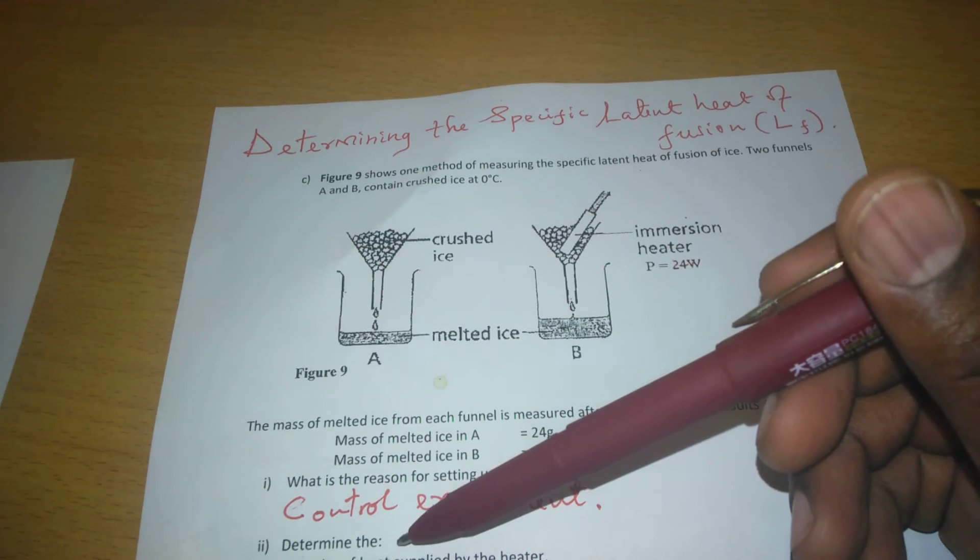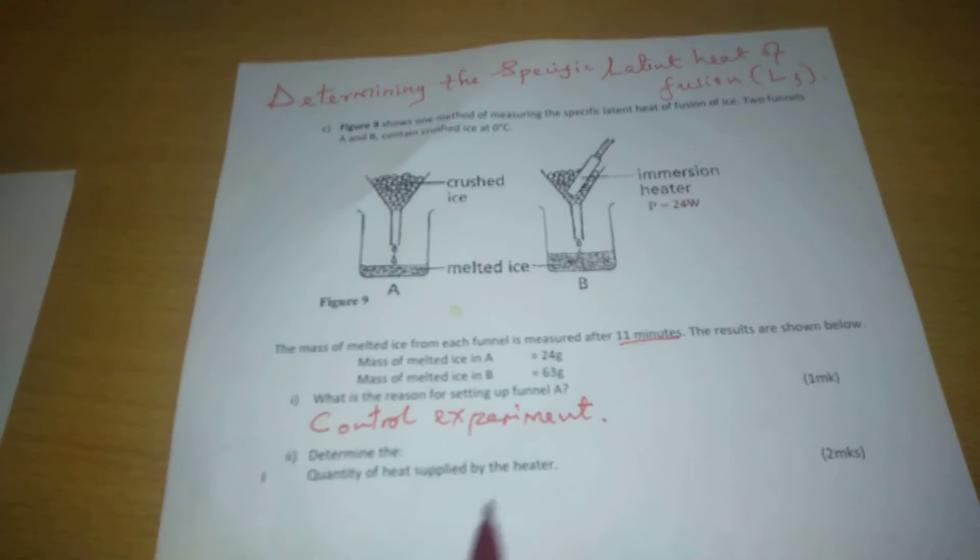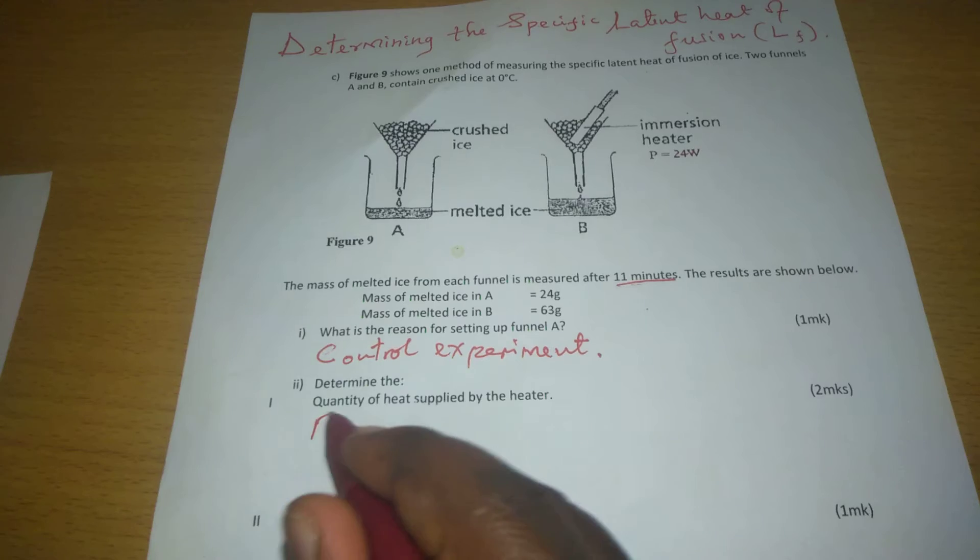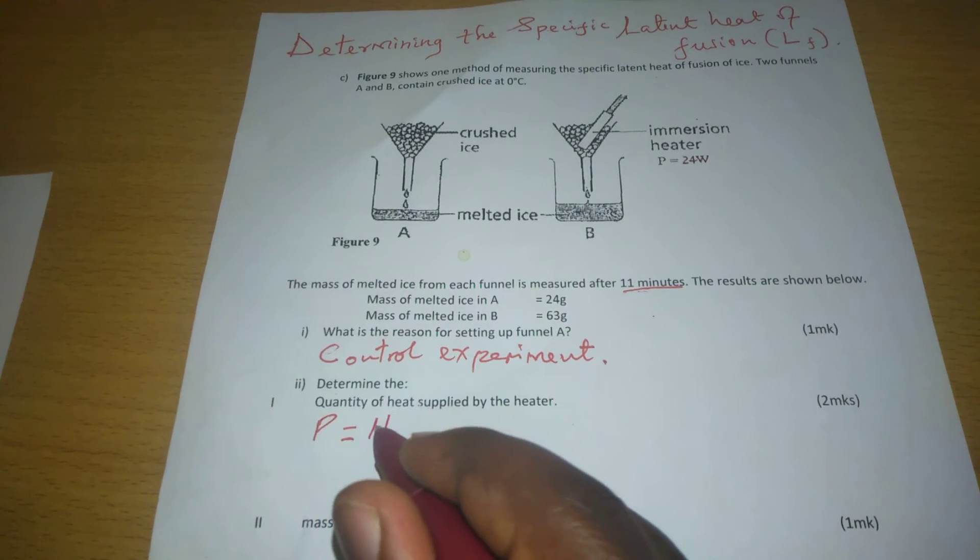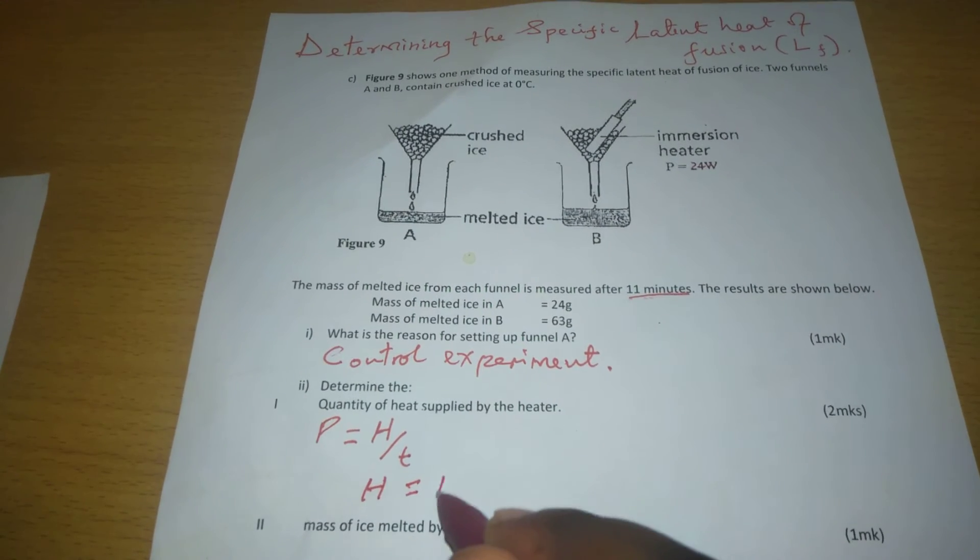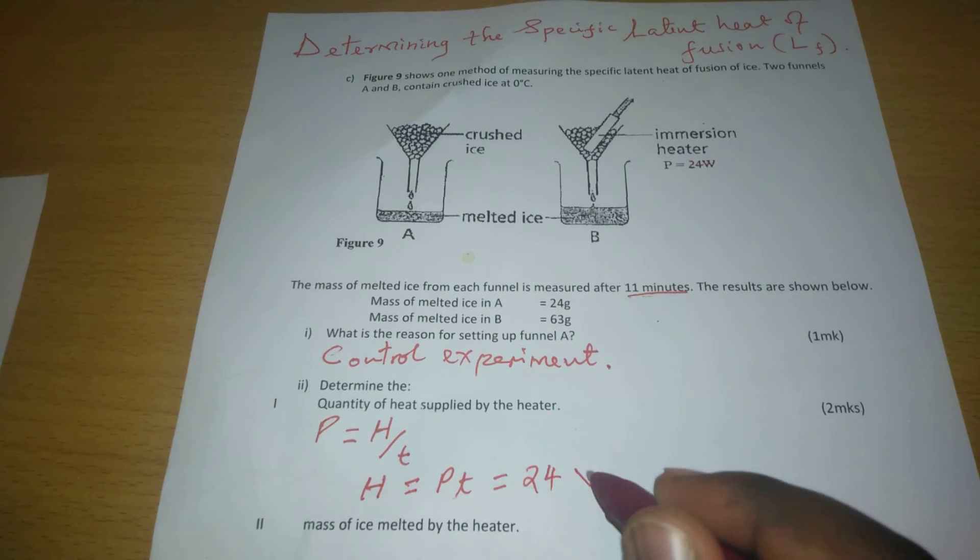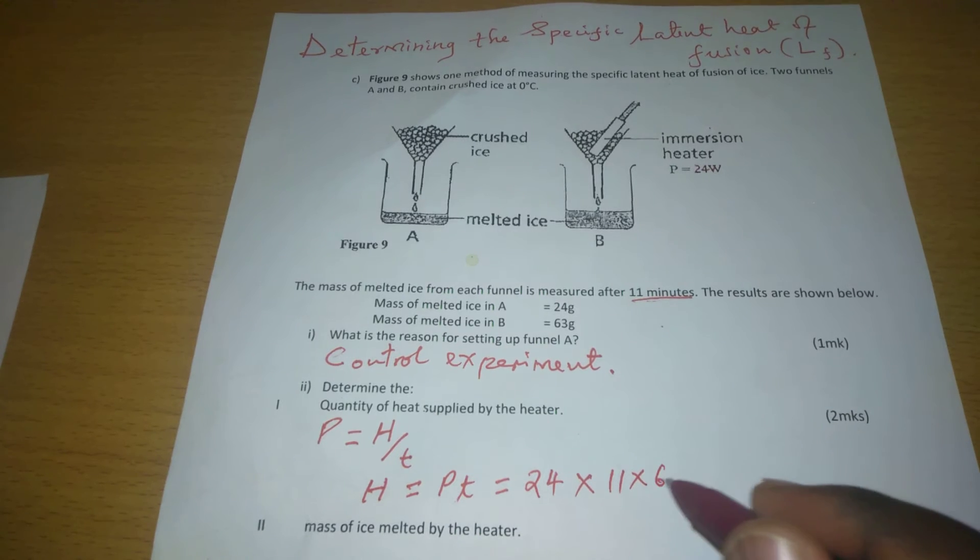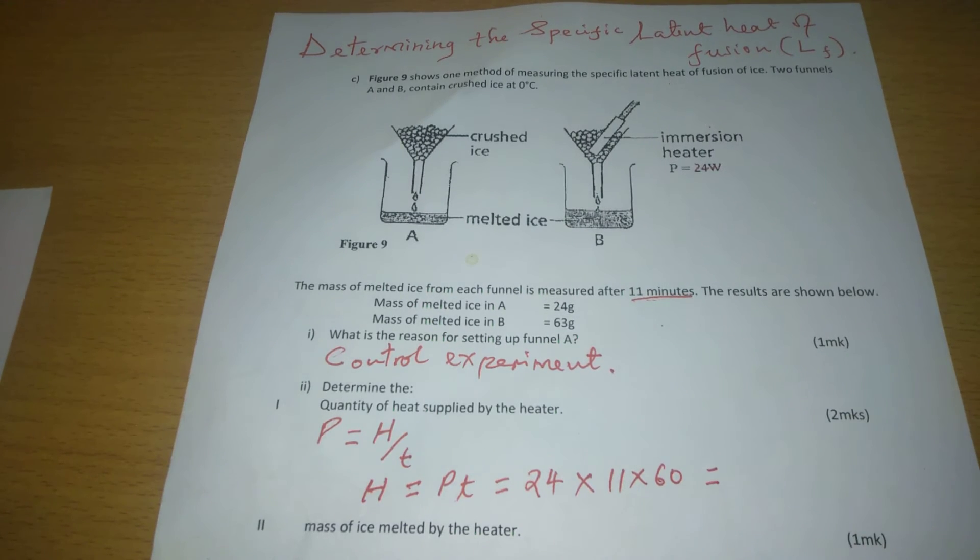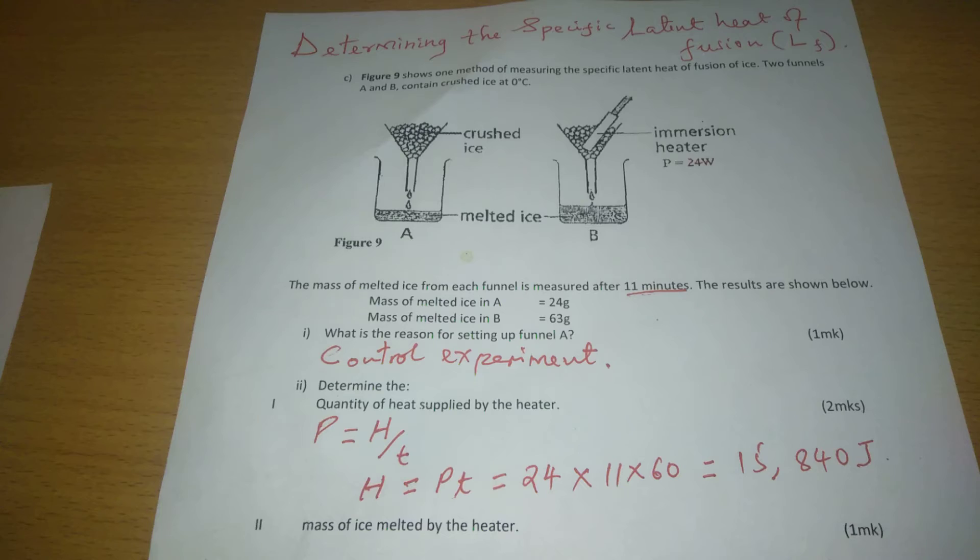Determine the quantity of heat supplied by the heater. We are already given power and we know that power is equal to amount of heat energy per unit time. For us to get heat energy, we can multiply power and time, so we multiply power of 24 and time 11 minutes, but we convert them to seconds by multiplying with 60. This is going to give us 15,840 joules of energy.